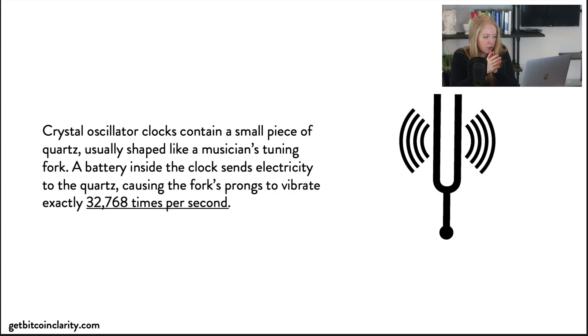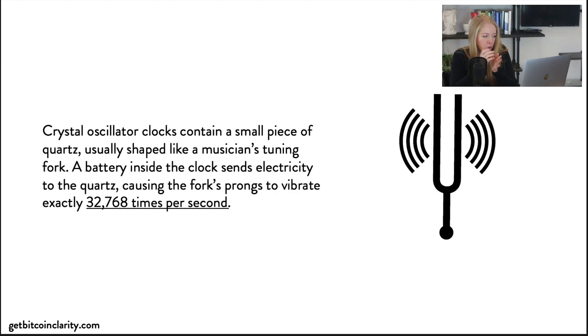A crystal oscillator clock contains a piece of quartz usually shaped like a musician's tuning fork. A battery inside the clock sends an electric signal to the quartz, causing the fork's prongs to vibrate exactly 32,768 times per second.